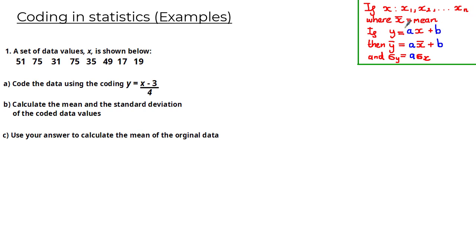If we can transform this data using a coding such as y = ax + b, where a and b are constant values, then the mean of our coded data is equal to ax̄ + b, where a and b are the values from the coding equation, and x̄ is the mean of the original data set. The standard deviation of the coded data is equal to a multiplied by σx, which is the standard deviation of the original data.